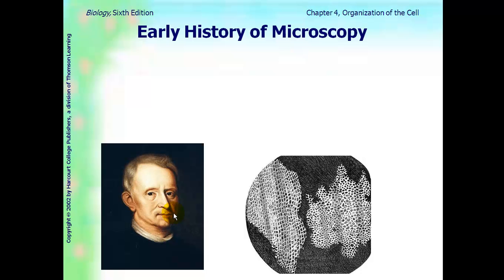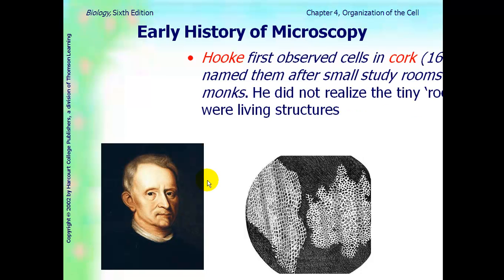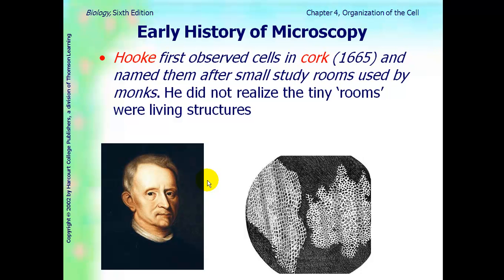Looking at the early history of the microscope, if you don't know who that guy is, you should. His name is Robert Hooke, and he first observed cells in cork. So, he took a thin slice of the cork in 1665, looked under a really poor microscope, actually, and this is actually his picture that he saw. He saw all these little compartments, and they looked like his room, and so that's where he came up with the word cell. He did not realize at the time that these little cells or rooms were actually living.